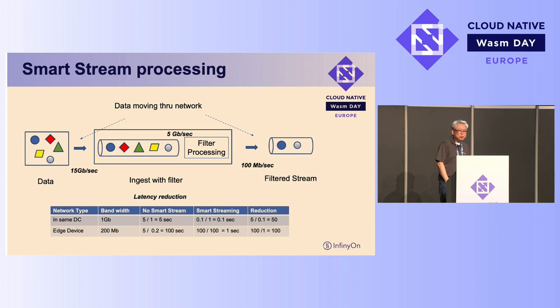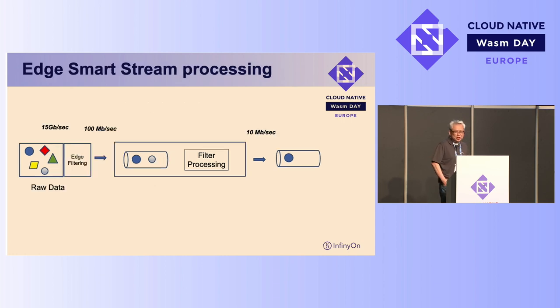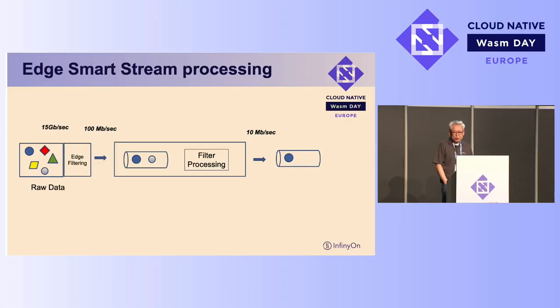We call this approach Smart Stream Processing, where instead of having a stream be a dumb pipe, we enhance it by adding intelligence to make the network more efficient. With edge devices, Smart Streaming can be even more powerful. One of the biggest issues dealing with IoT devices is large data volumes — IoT devices don't usually have reliable or fast connections. It's not feasible to ship all the raw data to the cloud for processing; it would be too expensive and just takes too long. With Smart Streaming, we can move data processing to the edge and move only the relevant data to the cloud for further analysis.